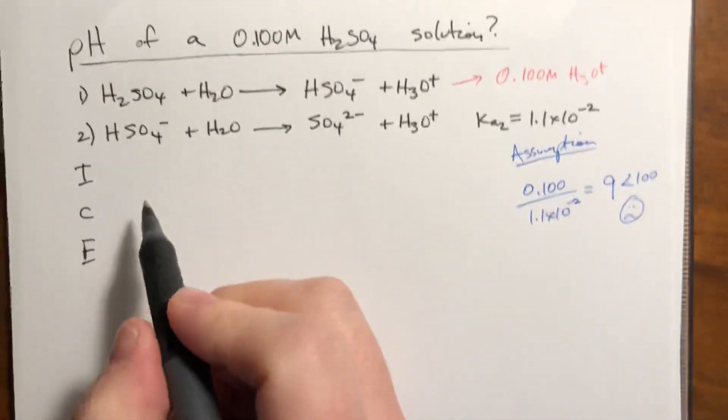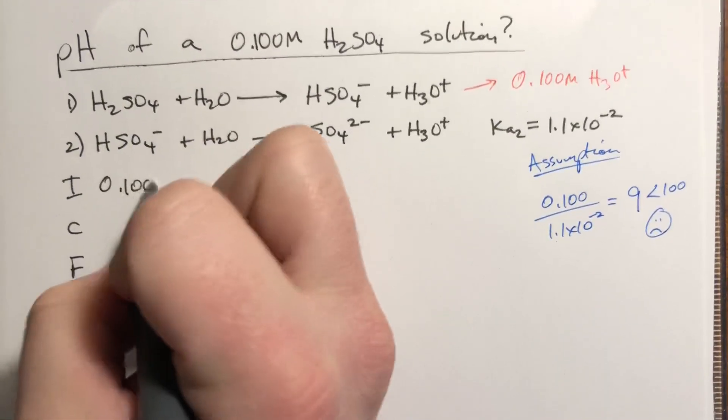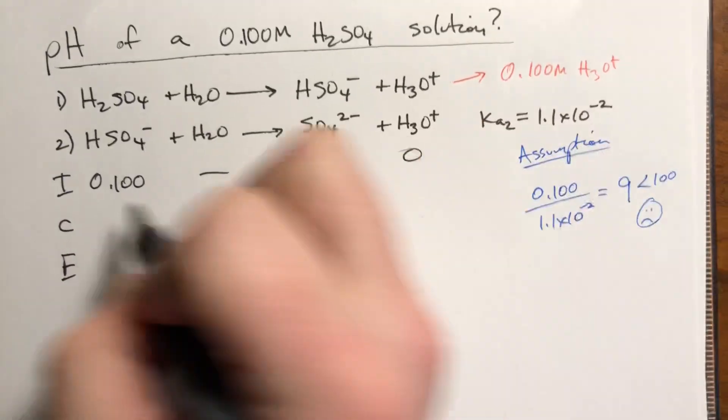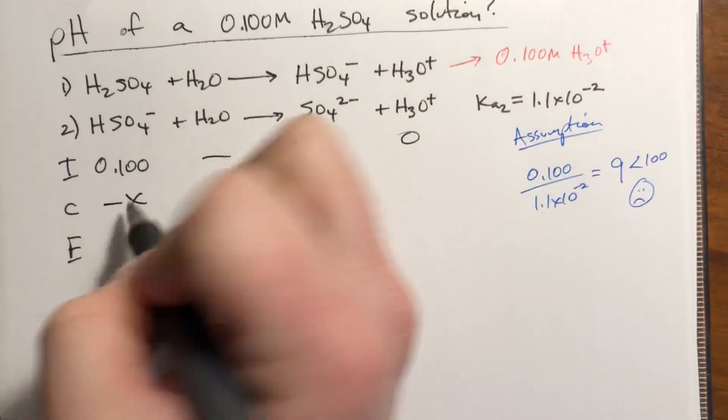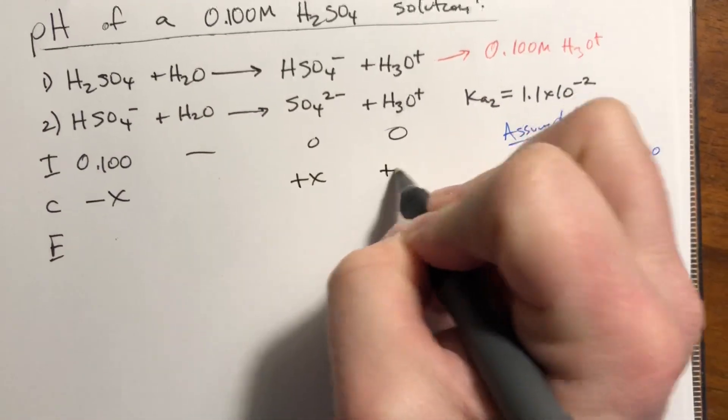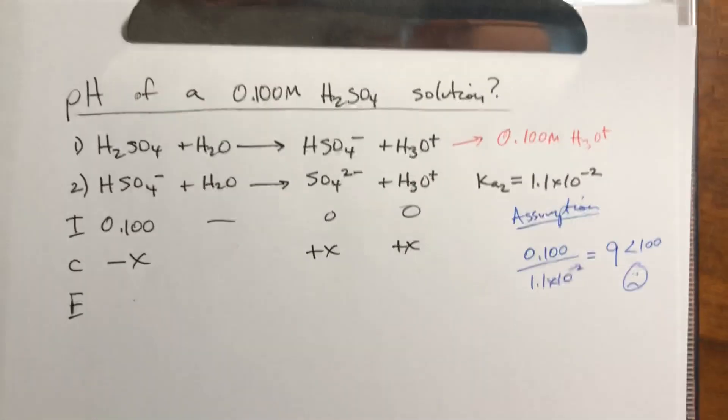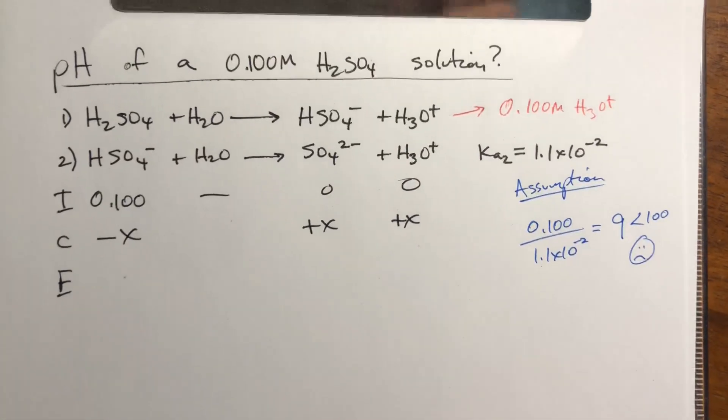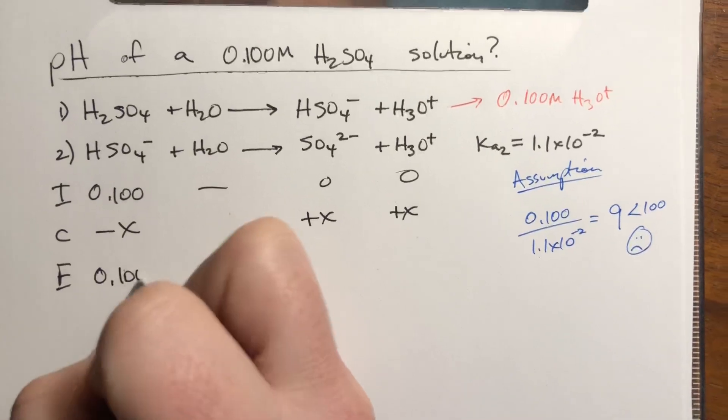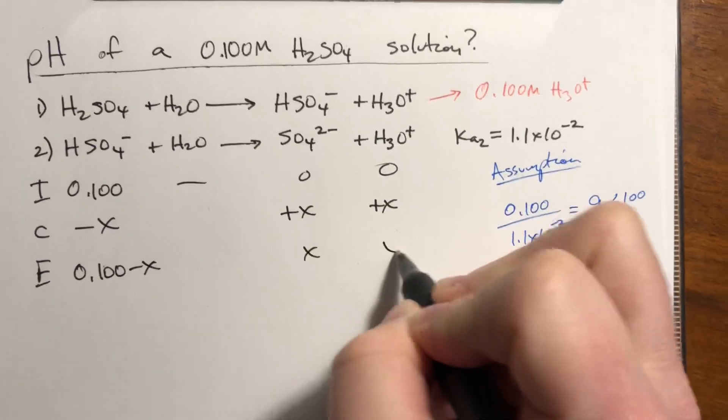So the rest of this is just an ICE method problem. So this is 0.100, this goes away, 0.0. This is going to decrease by some amount, these are going to increase by that same amount just like all the other ICE method ones we've seen in the acid-base chapter. This comes out to 0.100 minus x, and this is x, and this is x.